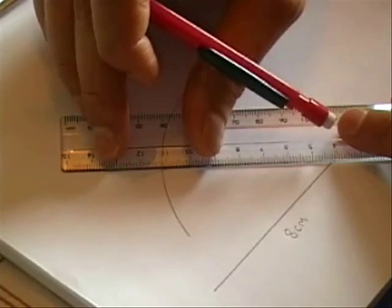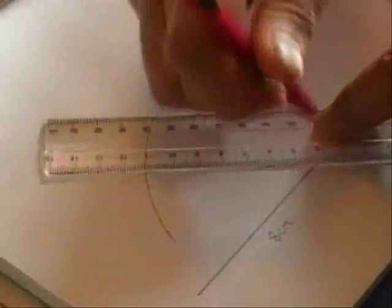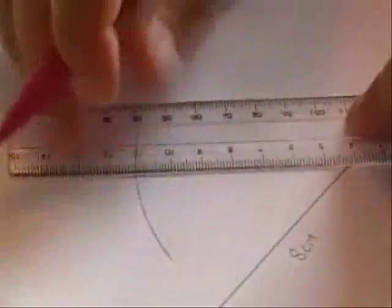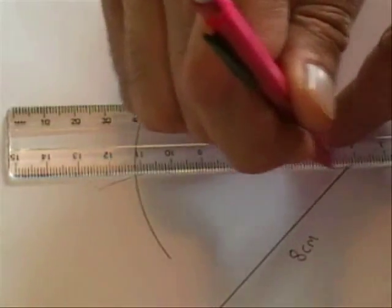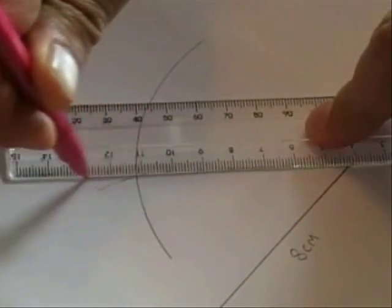And all we do now is from this point here to the bottom vertex, draw a line. I would advise you to carry the line past the intersection of the two arcs. And then repeat the process here.